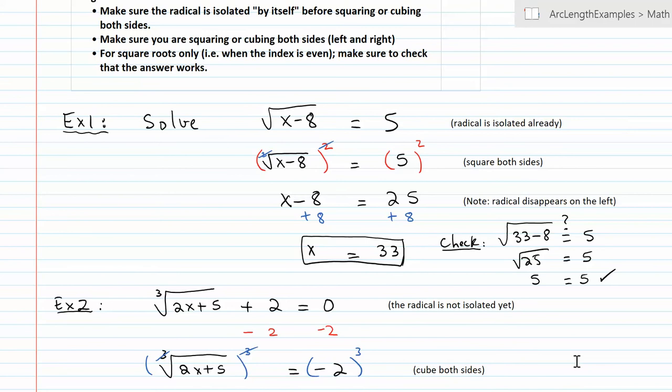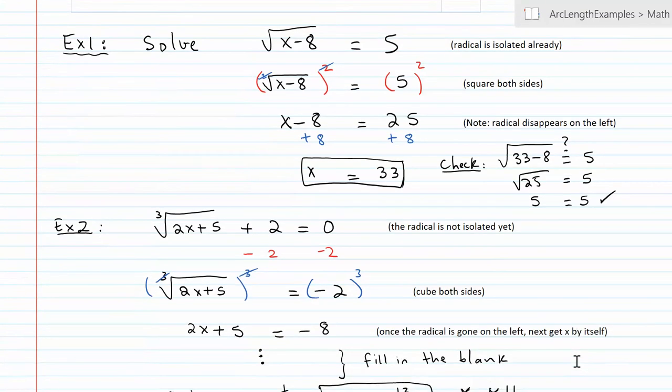Example number 2 is a little bit different, because the radical is not by itself. So expect on the exam, some radicals will be isolated, and some are not necessarily going to be isolated. So it's going to be your job to get those radicals by themselves if they're not isolated already. So once I subtract the 2 from both sides, now I have the green light to cube both sides since the index is 3 right here.